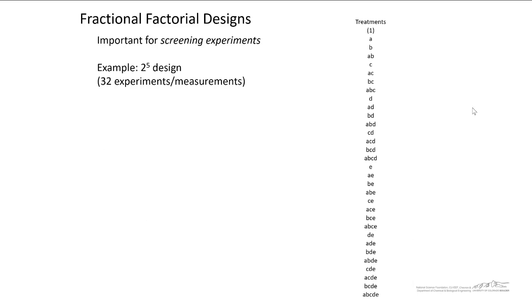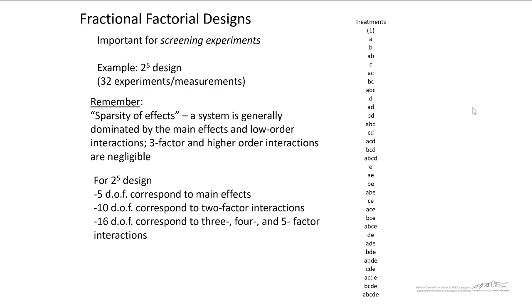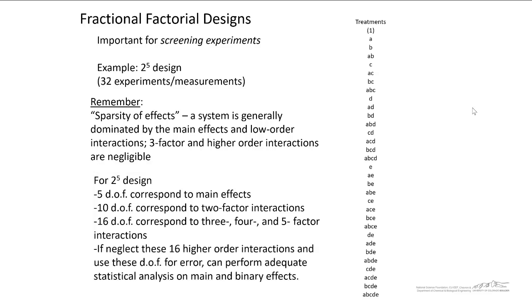So let's revisit a full factorial design. We have 2 to the 5th. We have 32 different possible experiments or treatment combinations as shown here on the right. The sparsity of effects principle basically tells us that a system is generally dominated by the main effects and low-order interactions. Three-factor and higher-order interactions are generally negligible. For a 2 to the 5th design, we have 5 degrees of freedom that correspond to main effects, 10 that correspond to two-factor interactions, and 16 degrees of freedom that correspond to 3-, 4-, and 5-factor interactions. So based on this sparsity of effects principle, if we neglect the 16 higher-order interactions and use these degrees of freedom, these 16 degrees of freedom for error, it's quite easy to perform adequate statistical analysis on the main and binary effects.